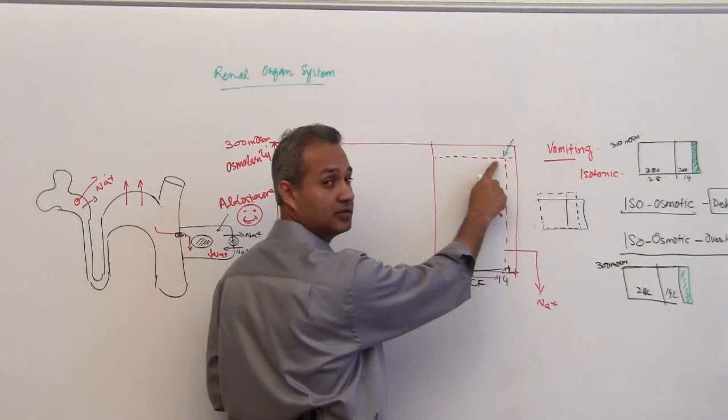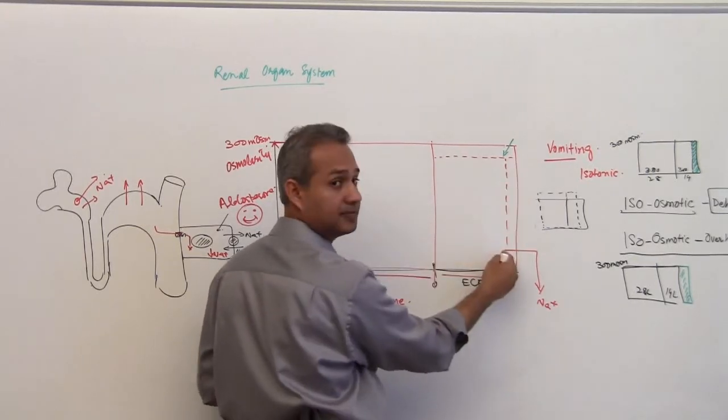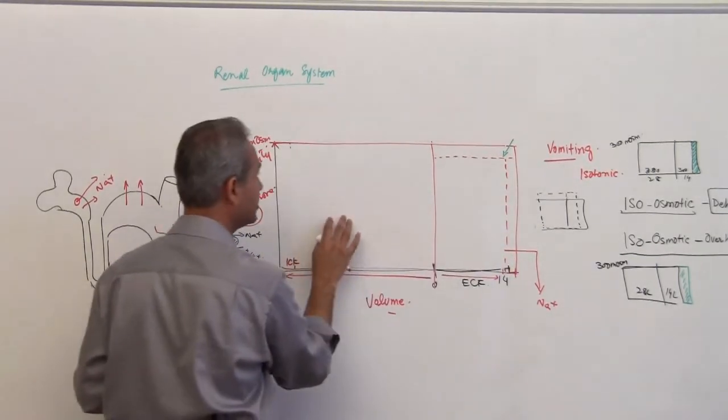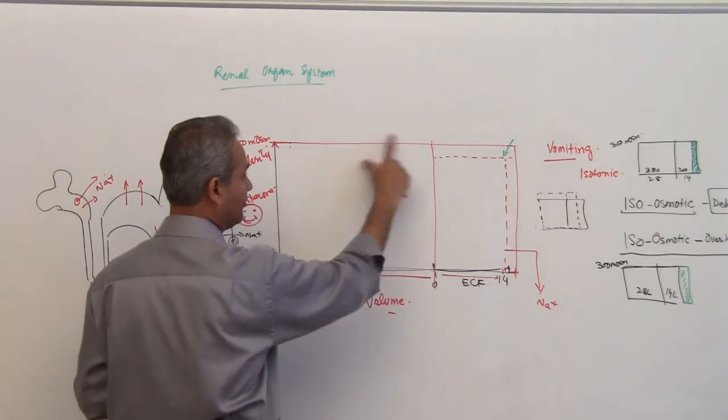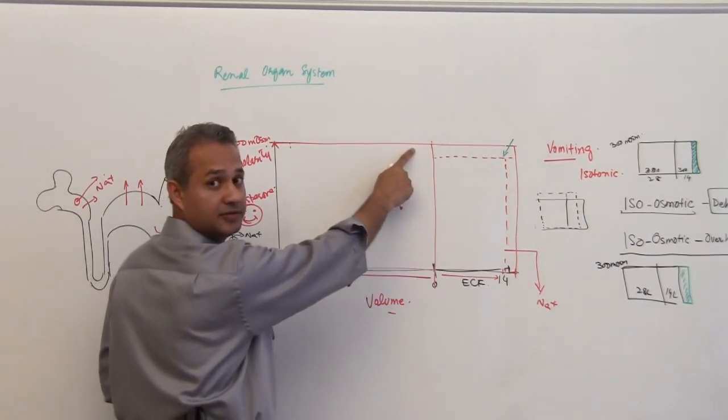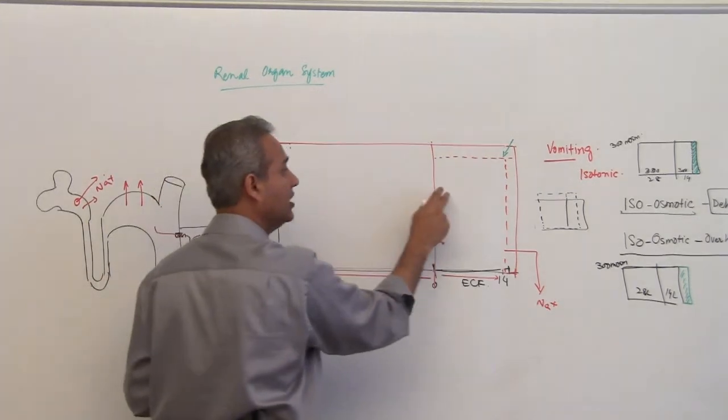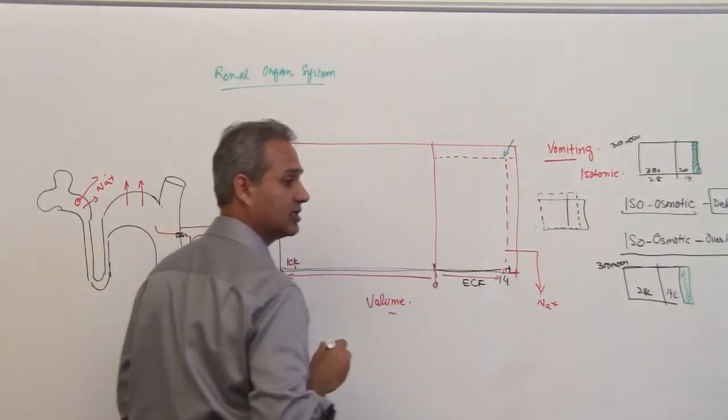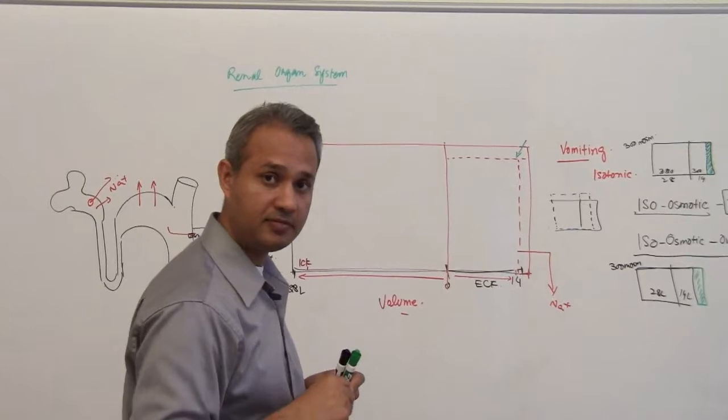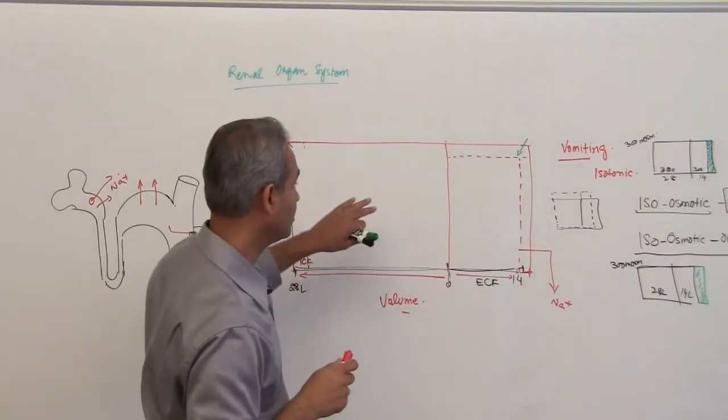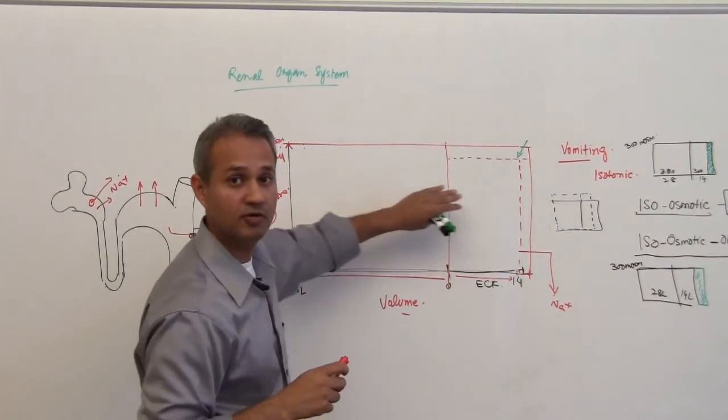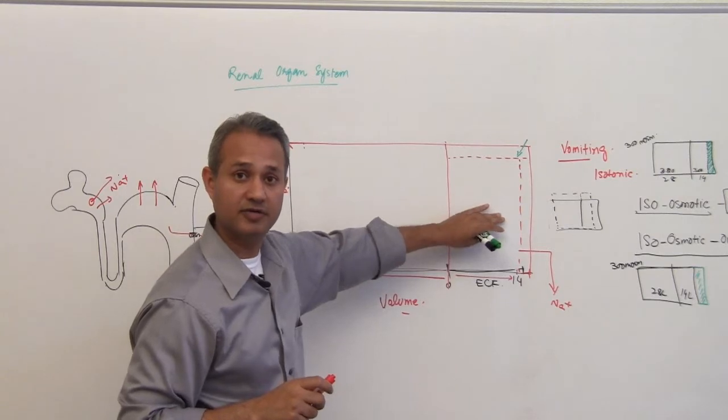But now what would happen on this side? Again, we have greater osmolarity here, we have fluid over here as well. Now what do you think—what happened to the concentration of the fluid? Where do we have greater amount of water? So water is in greater amount over here relative to this.